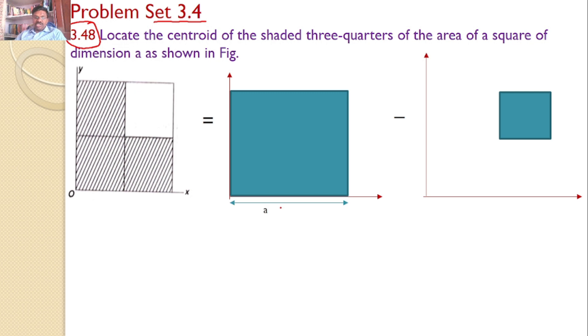Now what are the dimensions? This dimension is A and this dimension is A. This is A by 2, and this is A. This is at a distance of A by 2 from the y-axis and A by 2 from the x-axis.